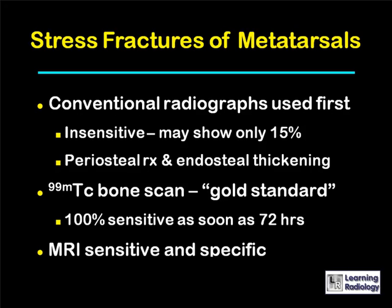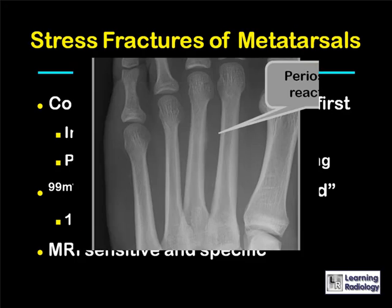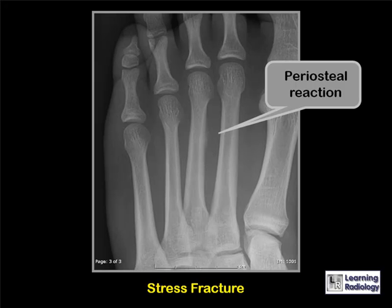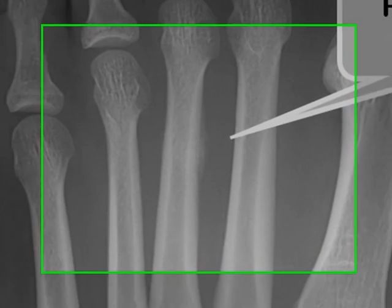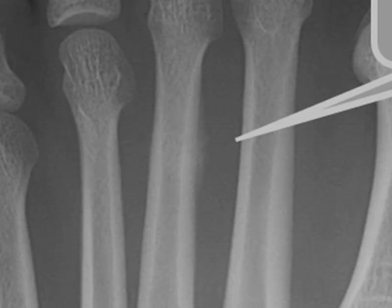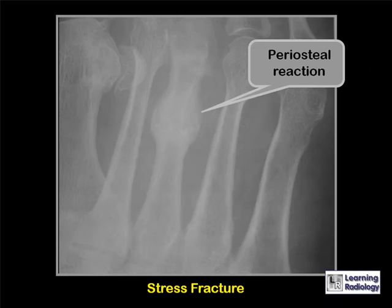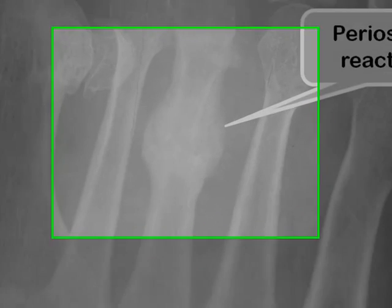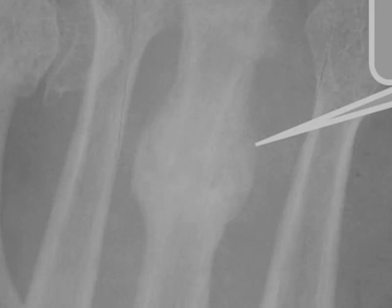MRI is both extremely sensitive and very specific, but it is also expensive. This is an example of the periosteal reaction which is classical for a stress fracture, in this case of the shaft of the third metatarsal. The fracture line itself is not visible, but the reaction to the fracture is. This is a more gross example of periosteal reaction surrounding a stress fracture of the shaft of the third metatarsal in another patient.